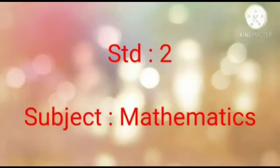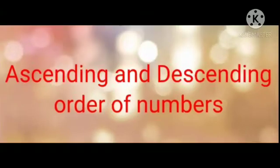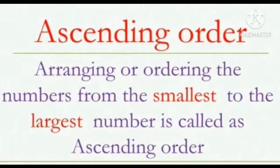Standard Second Subject Mathematics Chapter 23: Ascending and Descending Order of Numbers. Today we are going to learn a new topic — ascending and descending order of numbers. Ascending order means arranging or ordering the numbers from the smallest to the largest number, and this is called ascending order.